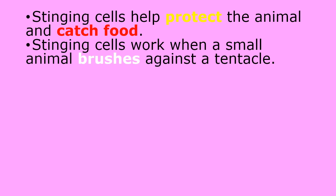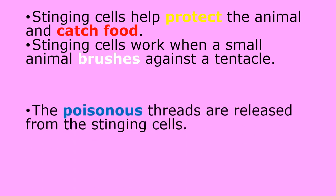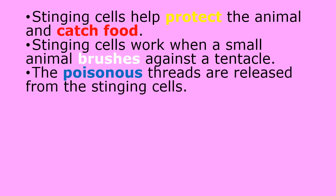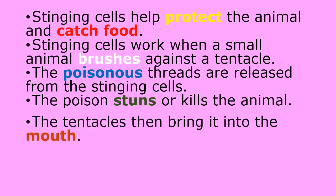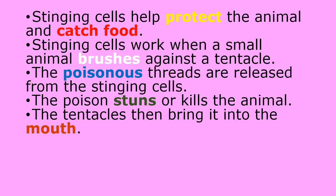Stinging cells work when a small animal brushes against a tentacle. The poisonous threads are released from the stinging cells. The poison stings or kills the animal. The tentacles then bring it into the mouth.